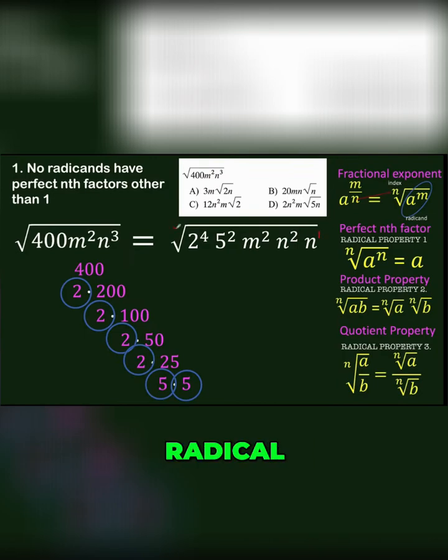The index of the radical is 2, so we want all exponents in the radicand to be divisible by the index. Since 3 is not divisible by 2, we split it as exponent 2 and exponent 1, because n² has an exponent divisible by 2.